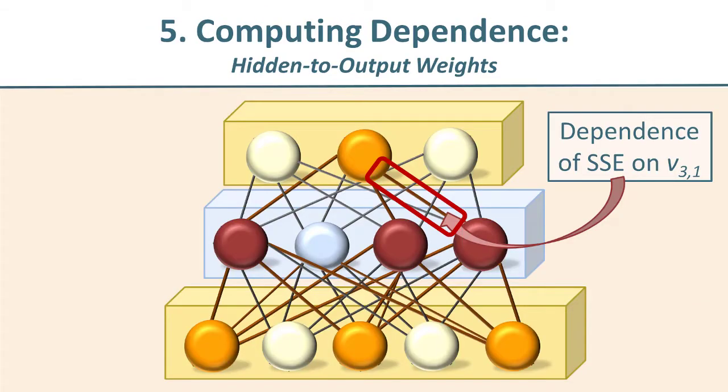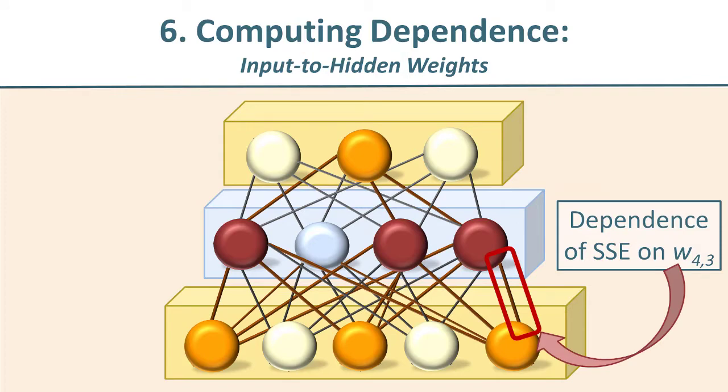In videos five and six of this series, we're going to take a look at how the SSE depends on the hidden to output connection weights. And then separately, a different derivation and somewhat more complex, we'll look at the dependence of the SSE on the input to hidden connection weights.